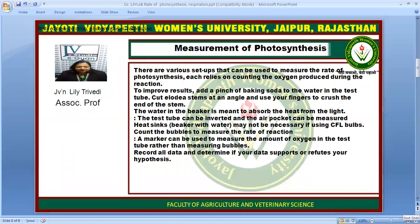There are various setups that can be used to measure the rate of photosynthesis, each relying on counting the oxygen produced during the reaction. To improve results, we can add a pinch of baking soda to the water in the test tube. You can take an Elodea stem or Hydrilla, cut at an angle, and use your fingers to crush the end of the stem. The water in the beaker is meant to absorb heat from the light, which can be provided using CFL bulbs. The test tube is inverted so that the air pocket can be measured, and a marker can also be used to measure the amount of oxygen rather than counting bubbles.